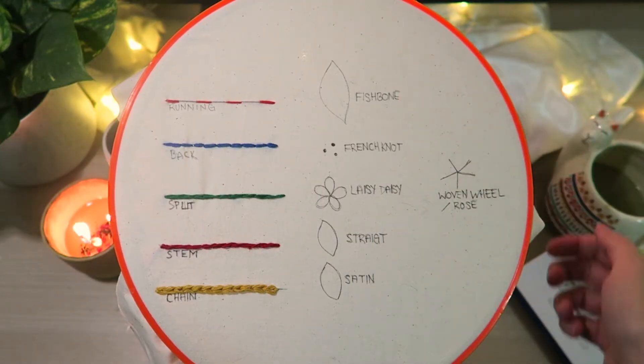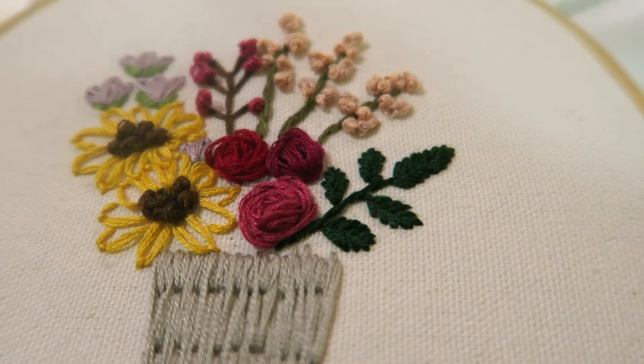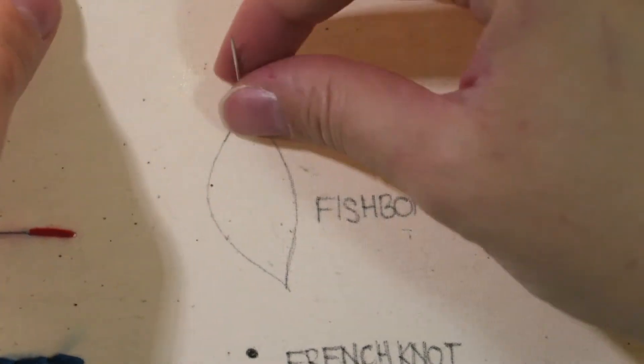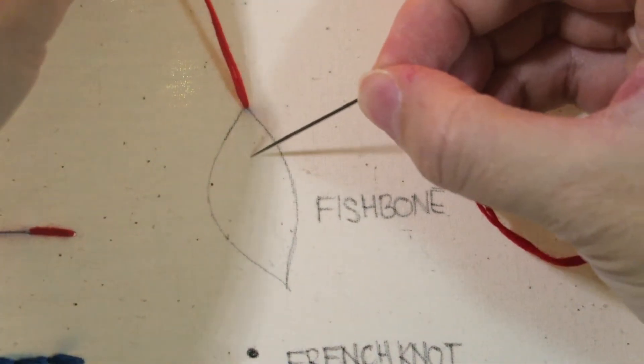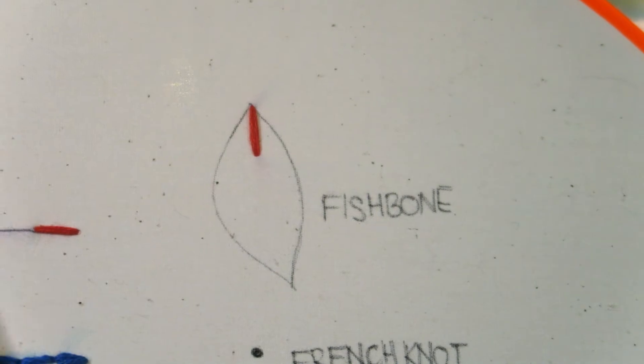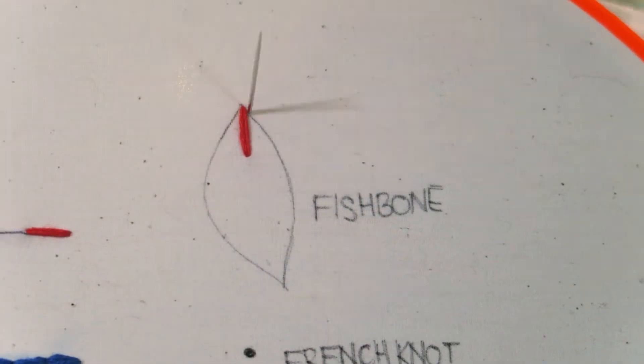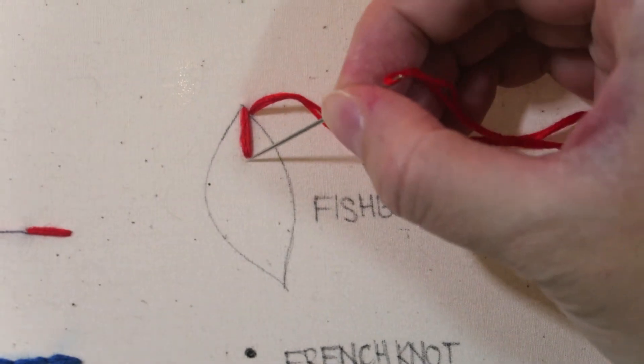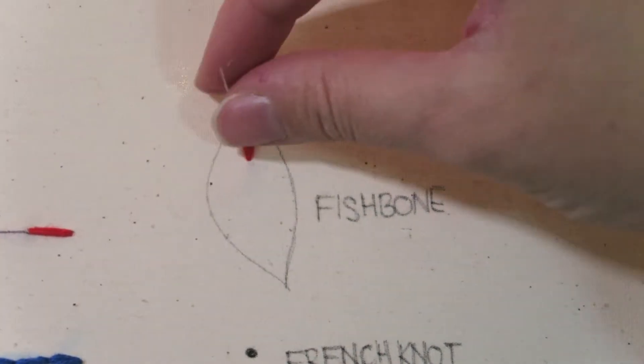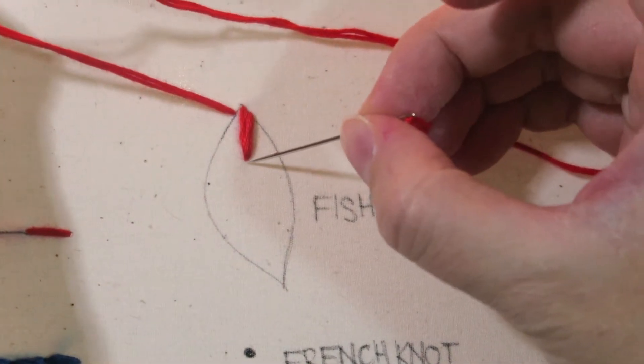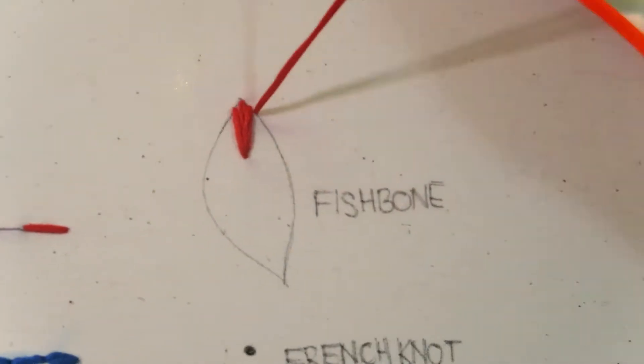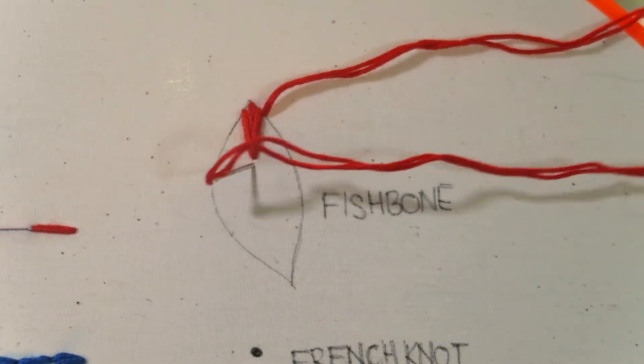All right moving on to the sixth stitch, the fishbone. This stitch is super popular when it comes to creating leaves. Starting at the top of the leaf from the back of the hoop, pull the needle and thread all the way to the front. Complete the stitch by threading it from the front to the back. Then slightly to the right of the first hole stitch from the back to the front. Complete the stitch by threading from the front to the back slightly below the second hole. Repeat this on the left hand side. Then move again to the right hand side. Repeat this process until you're complete.